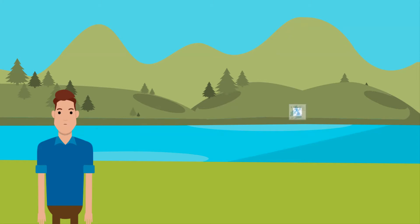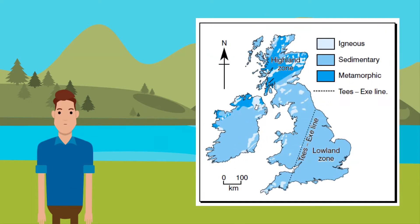Igneous and metamorphic rocks are found largely in the north and west of the British Isles, to the north and west of the Tees-Exe line. Most of the south and east of the isles are made up of sedimentary rocks.